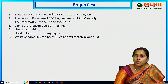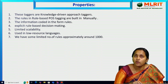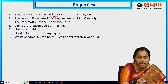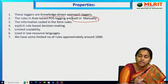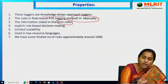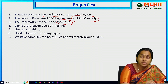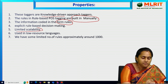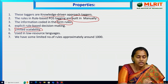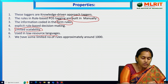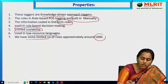Now let's see the properties of rule-based POS tagging. These taggers are knowledge-based driven approaches — they contain data and knowledge. Rule-based POS tagging rules are built in manually, meaning they are user-defined tags. The information is coded in the form of rules; we apply those rules to the sentences — explicit, rule-based decision making. It has limited scalability when dealing with large data sets. It is used in low-resource languages, and there are around a thousand rules available.